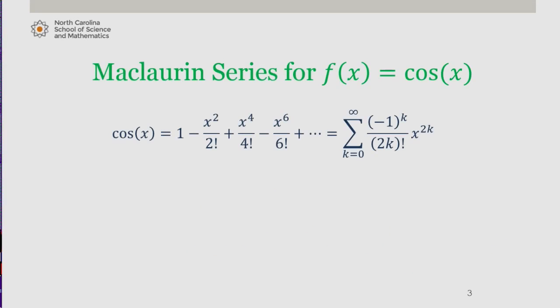Now, integrating cosine of x, we have, term by term, we get x minus x cubed over 3 times 2 factorial, which is 3 factorial, plus x to the fifth divided by 5 times 4 factorial, which is 5 factorial, minus, and so on.